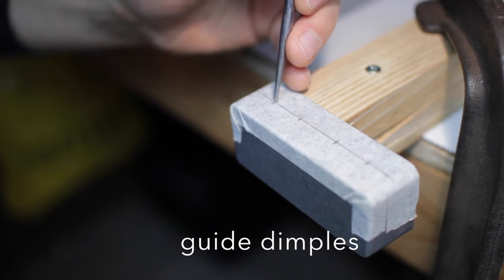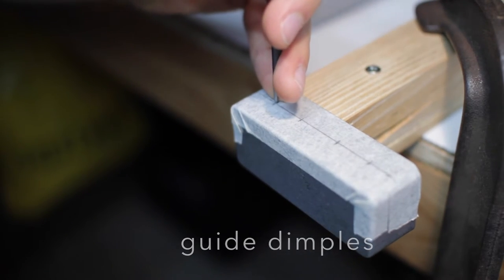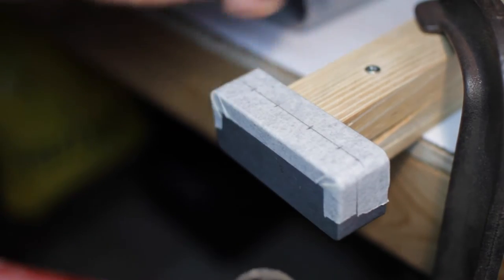Next, using a center punch, I pounded some dimples into the enclosure where I'll drill the holes to help center the drill bit.